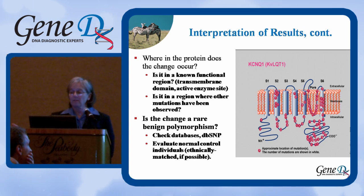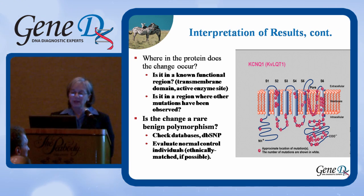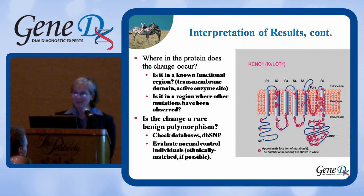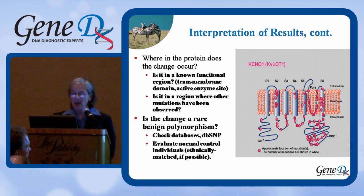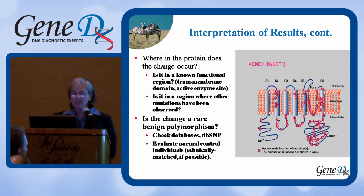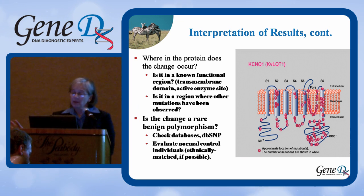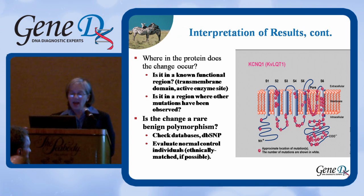We look at the protein itself — where does the change occur? Is it in a known functional region? We like transmembrane domain mutations because we usually think they're real, although I was just talking today about transmembrane mutations that don't cause problems. We use our knowledge of the protein itself and look at the distribution of mutations reported previously, looking for hot spots of where mutations might have been. And then we ask whether this change is just a rare, benign polymorphism — we can check the databases to look for that.